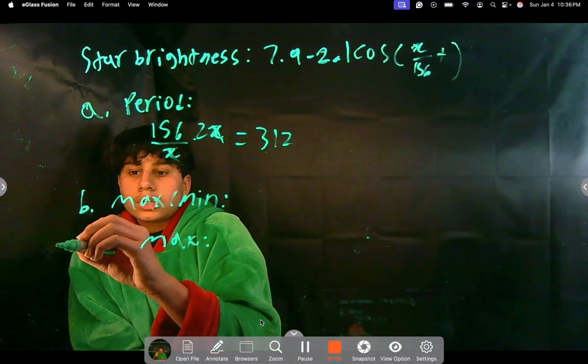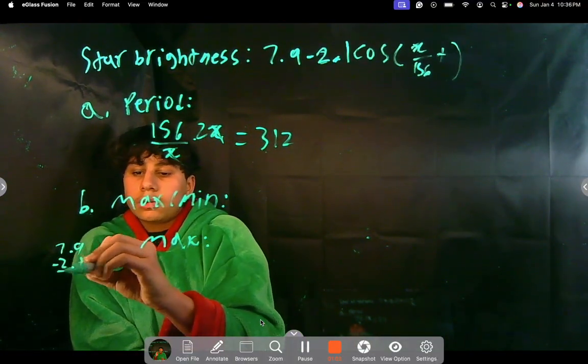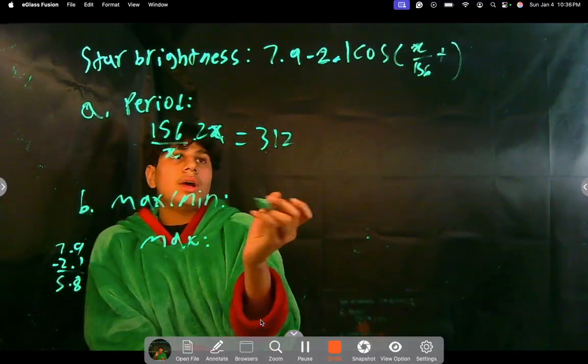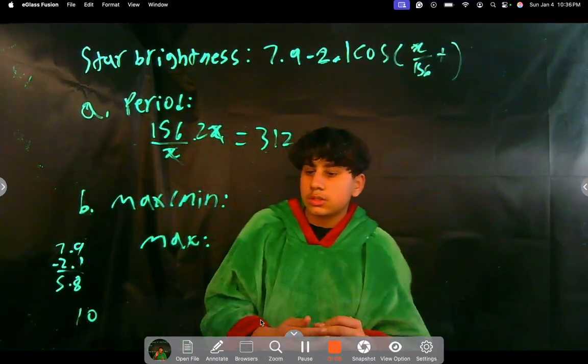So if we multiply by 1, we get 7.9 minus 2.1, which is 5.8. So that's one of the points. And our other point is 10. 7.9 plus 2.1 is 10.